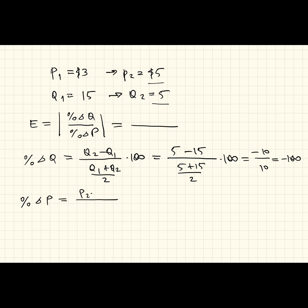Percentage change in price. Again, write down the formula: P2 minus P1 divided by P1 plus P2 divided by 2 times 100. So P2 is 5, P1 is 3, divided by 5 plus 3 divided by 2 times 100. It's 2 over 4 times 100. Looks like 50% here.